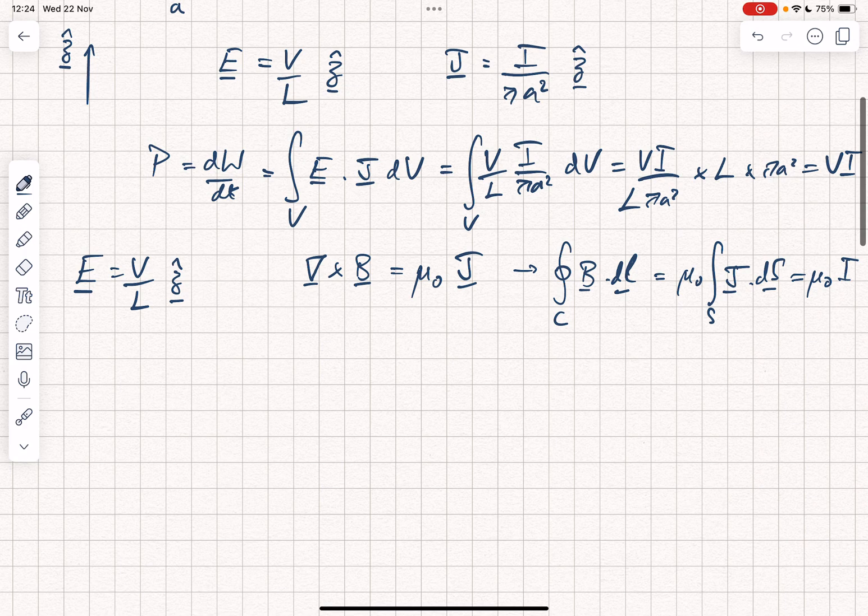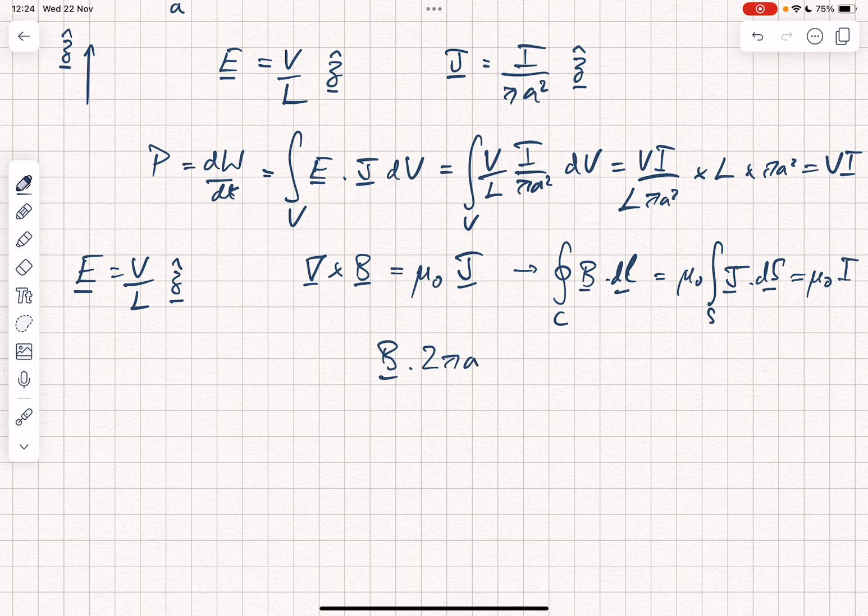And when we take the closed loop integral of B, we find that you can write B multiplied by 2 pi A. That's the circumference and there shouldn't be a vector sign on the B there, is equal to mu naught I. The B field just from the geometry must lie in the phi direction. So we say that B is equal to mu naught I over 2 pi A in the phi direction. That's a standard kind of example and result.